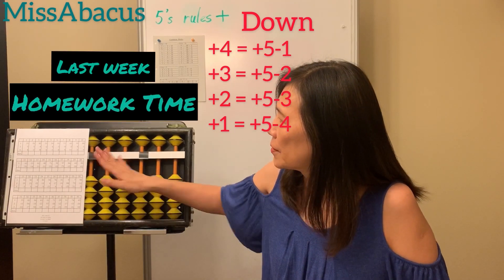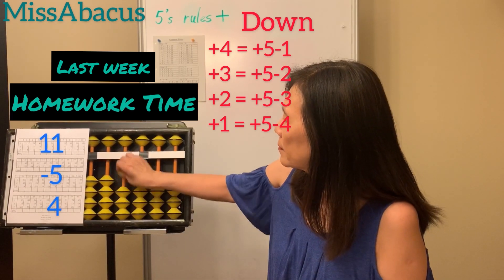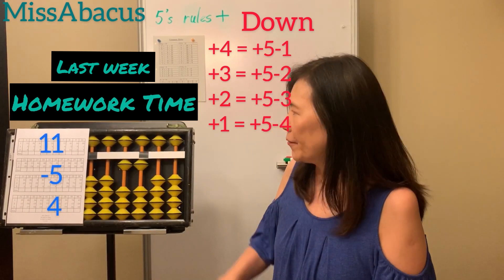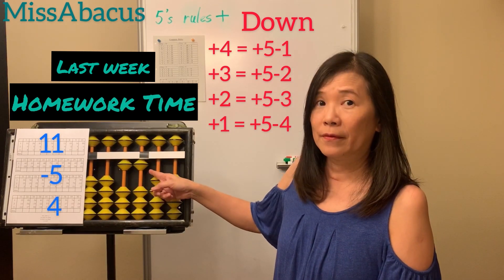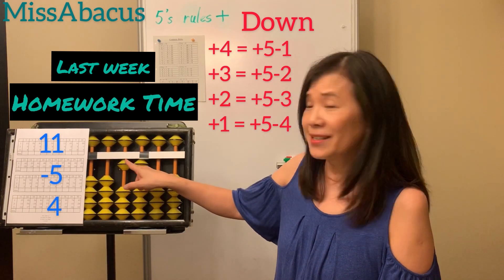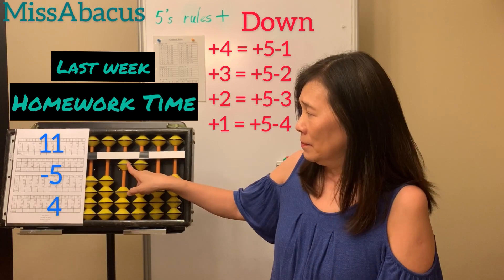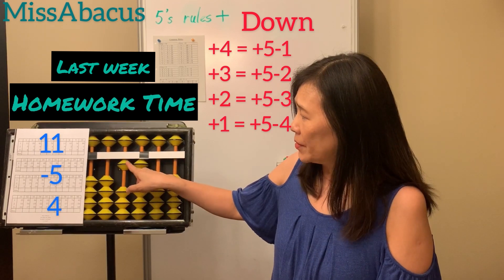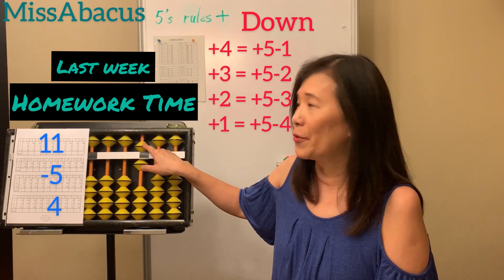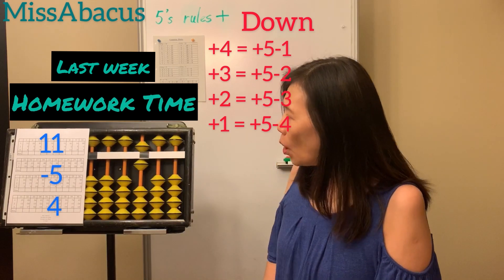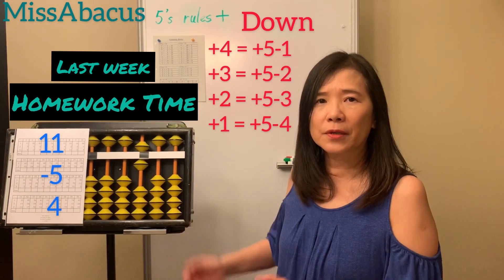The first problem: eleven. Minus five, minus five, minus five — of course minus ten first because you only have one. Minus five is minus ten plus five. Five is five. Remember: plus four — one, two, three — only three left.